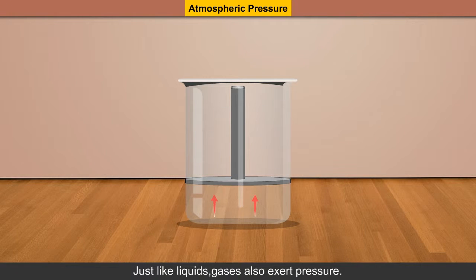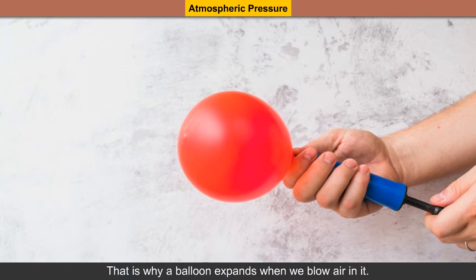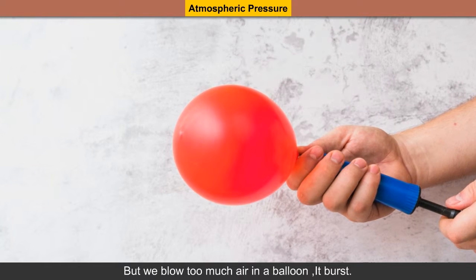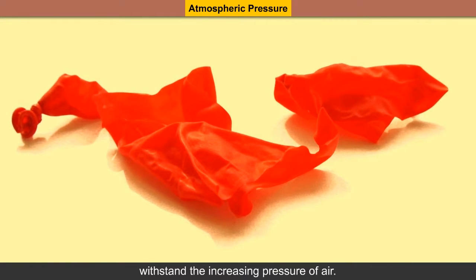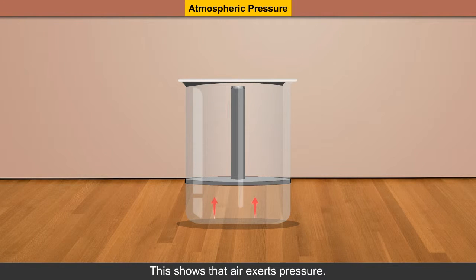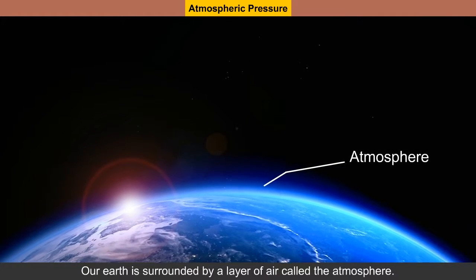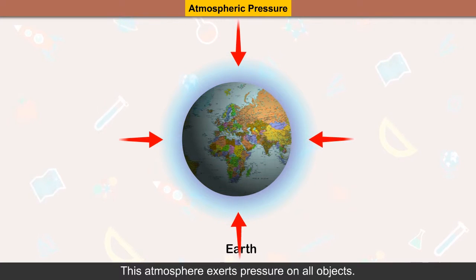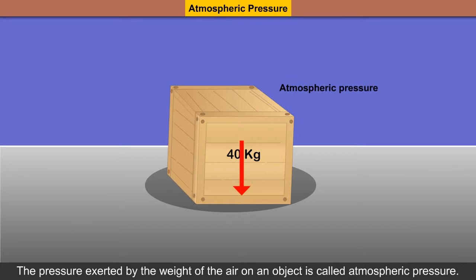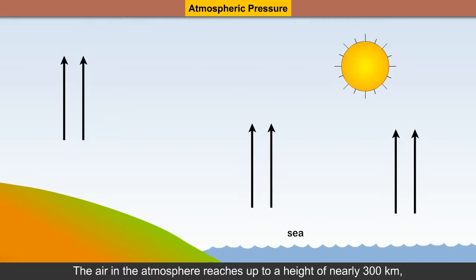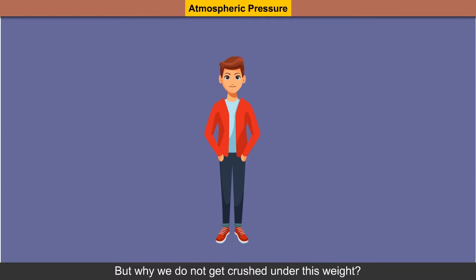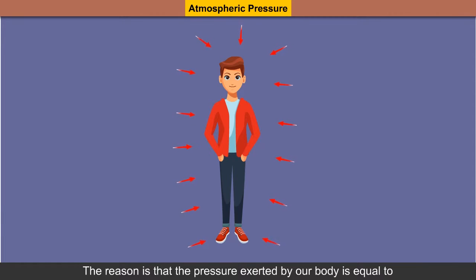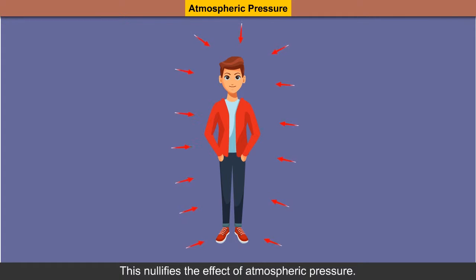Atmospheric pressure. Just like liquids, gases also exert pressure. That is why a balloon expands when we blow air into it. But if we blow too much air into a balloon, it bursts, because the material of the balloon is not able to withstand the increasing pressure of air. Our earth is surrounded by a layer of air called the atmosphere. The pressure exerted by the weight of the air on an object is called atmospheric pressure. The air in the atmosphere reaches up to a height of nearly 300 km, exerting a lot of pressure on the earth. However, we do not get crushed under this weight because the pressure exerted by our body equals the pressure exerted by the atmosphere, which nullifies the effect of atmospheric pressure.